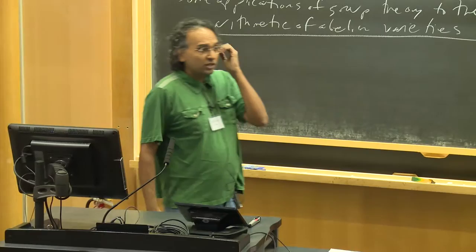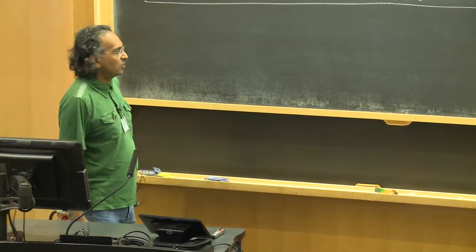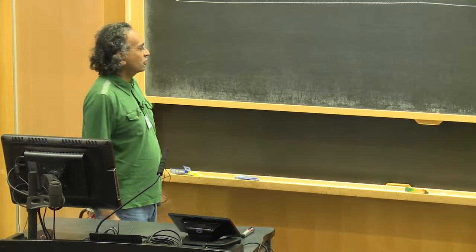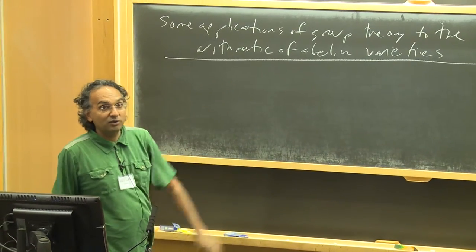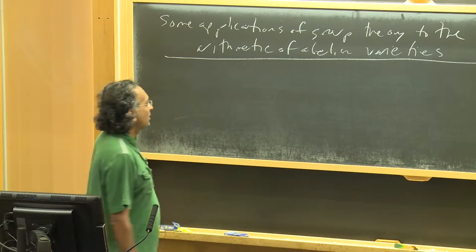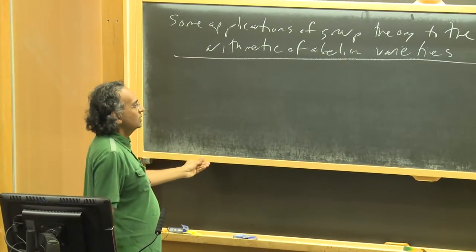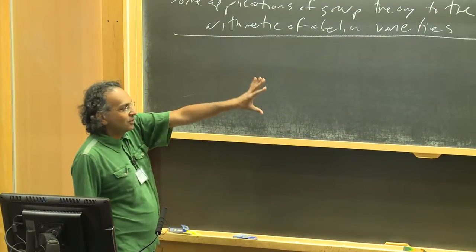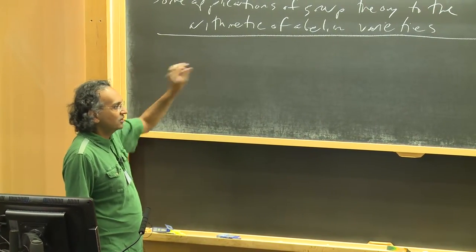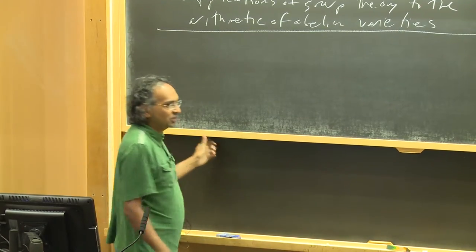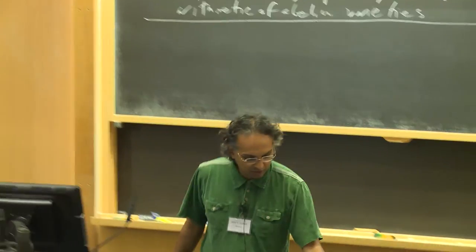What I want to do in the pre-talk is make sure that some of the most basic structures associated to abelian varieties are already on the board, and we have a chance to absorb them before we get going. Some of the notation that I'll need will already be in the pre-talk. The unlucky people who don't get to be here will get ambushed with this notation at the start.